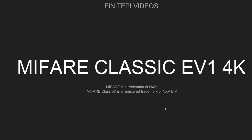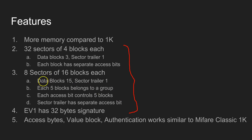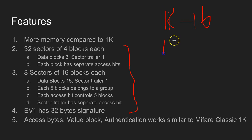Hi, welcome to FinitePi Videos, this is DC. In this video I'm going to show you how to use MIFARE Classic EV1 4K RFID tags. These are some of the features of the 4K tags. It has obviously more memory than MIFARE Classic 1K. The entire memory is organized as follows: altogether there are 40 sectors, whereas the 1K had only 16 sectors.